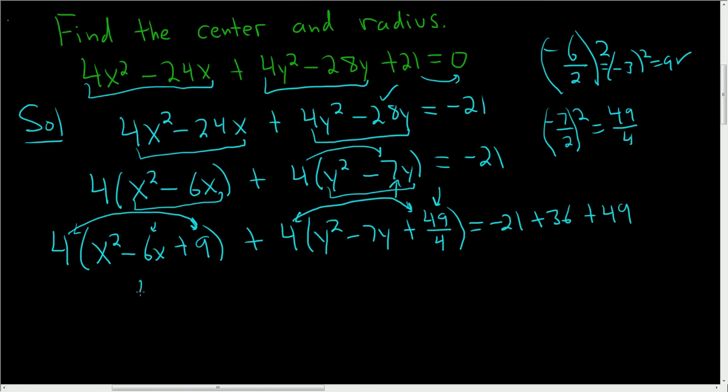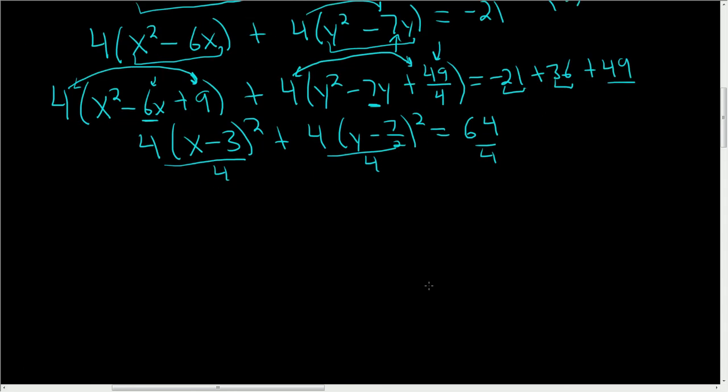Now let's clean this up. This is 4(x - 3)² plus 4(y - 7/2)². Over here, be careful, it's super easy to mess up. So 36 - 21 is 15. 15 + 49 is 64. Divide everything by 4.